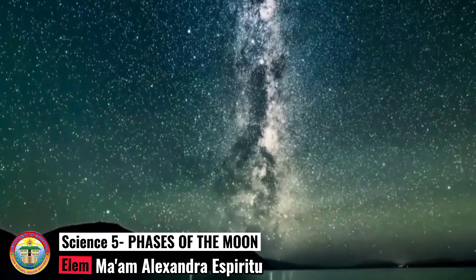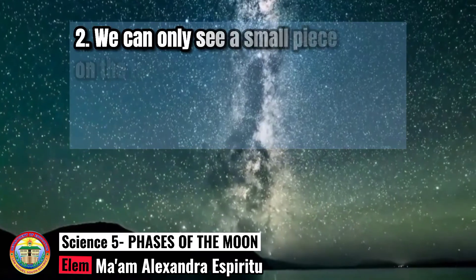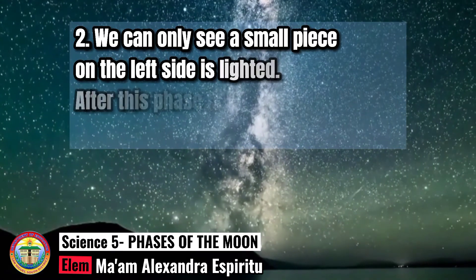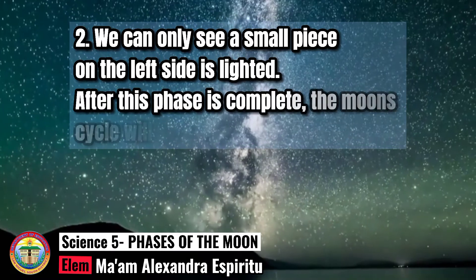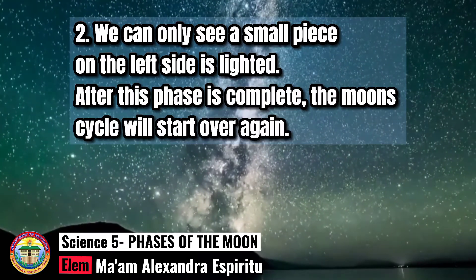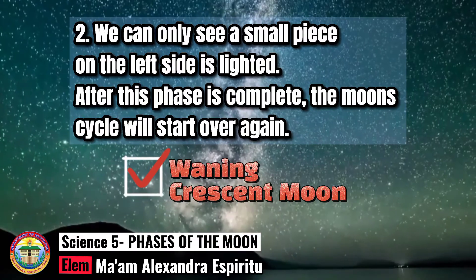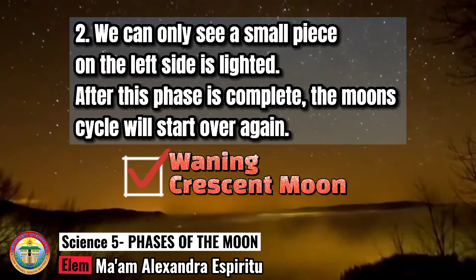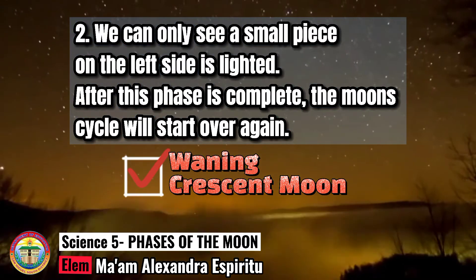Number 2: We can only see a small piece on the left side that is lightened. After this cycle is complete, the Moon cycle will start over again. Waning Crescent Moon. If this is your answer, then you got the correct answer.